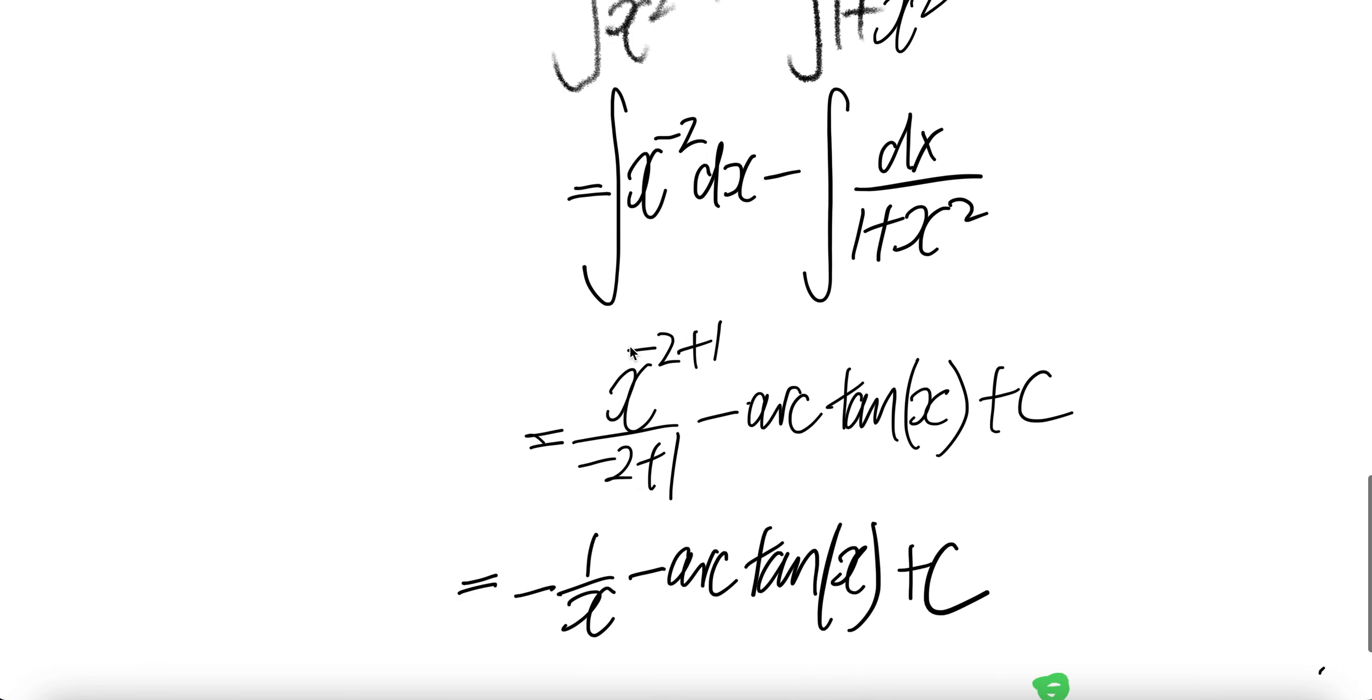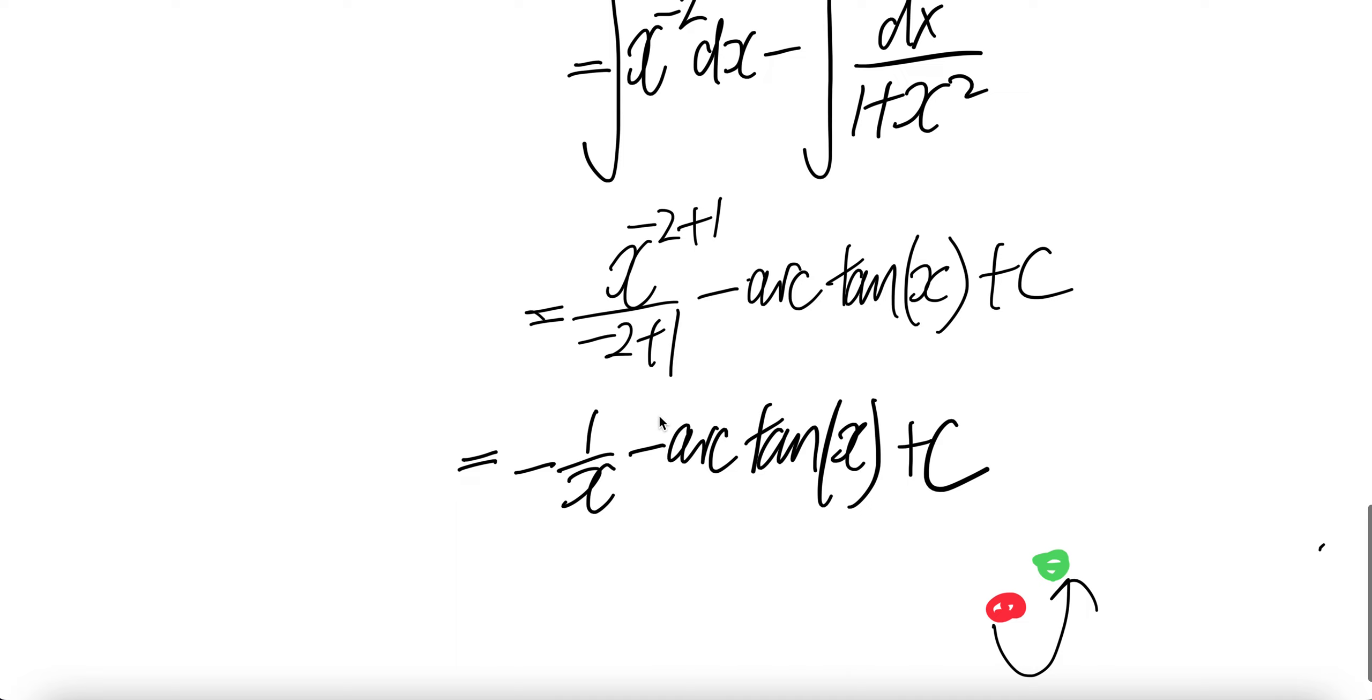Integral of this is x upon negative 2 plus 1 over the same thing downstairs. Here is minus arctan(x) plus C, and then minus 2 plus 1 is minus 1 up here. Minus that, it will be minus 1 over x minus arctan(x) plus C. Done.